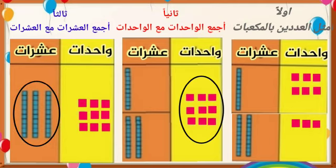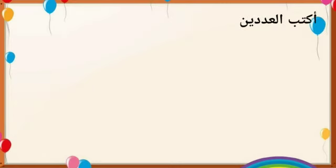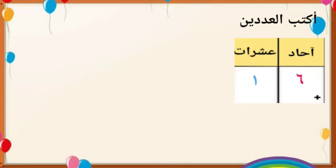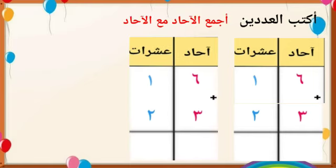كم عشرة أصبح؟ ثلاث عشرات، أحسنتم. بعد تمثيل الأعداد بالمكعبات، نبدأ بكتابة العددين ستة عشر وثلاثة وعشرون. الخطوة الثانية: نجمع الآحاد مع الآحاد، أي ستة زائد ثلاثة.